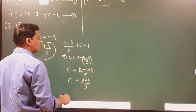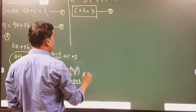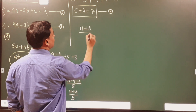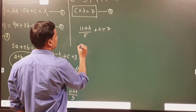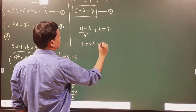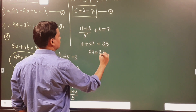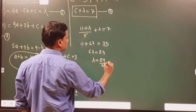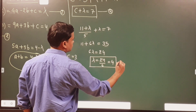I will substitute this value of c into equation 4: (11 + lambda)/5 + lambda = 7. From here I get 11 + 6*lambda = 35, or 6*lambda = 24, or lambda = 4. So lambda = 4 is my answer.